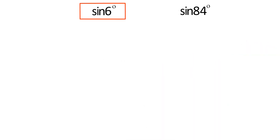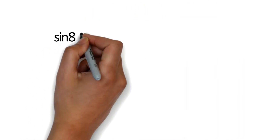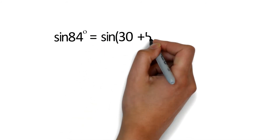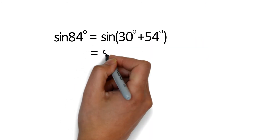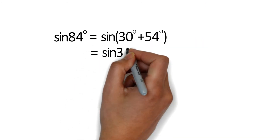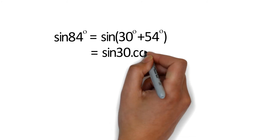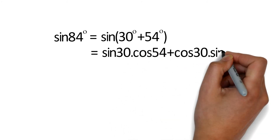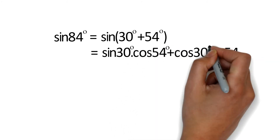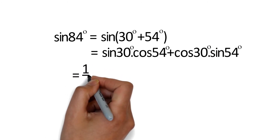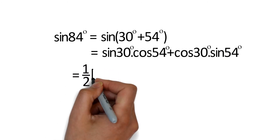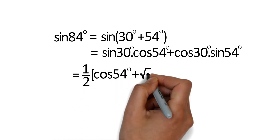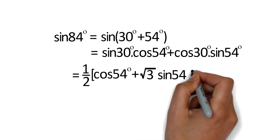Now sin 84° = sin(30° + 54°), which equals sin 30° cos 54° plus cos 30° sin 54°, which equals (1/2) cos 54° plus (√3/2) sin 54°.